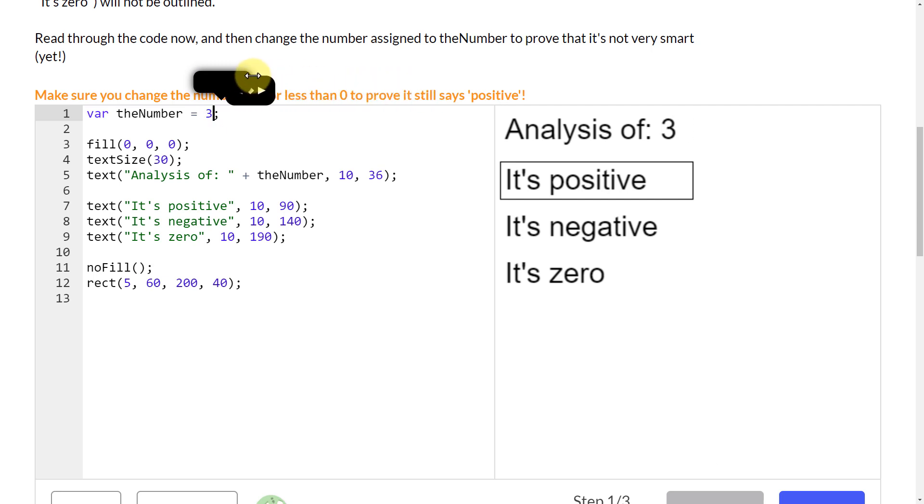What we want to happen is when we move this number to zero, we want the rectangle to move over zero. And when we move the number to negative, we want the rectangle to move over negative. So we're going to need to use some if statements to make that happen.